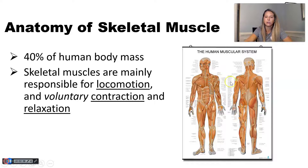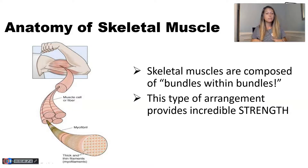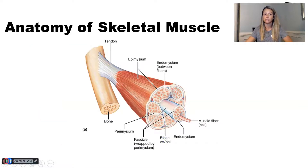Big picture, I need you to understand that skeletal muscles are composed of what we call bundles within bundles, and that particular type of arrangement gives the muscle an incredible amount of strength. Within the muscle organ there are lots of bundles, and even within those bundles there are smaller bundles.